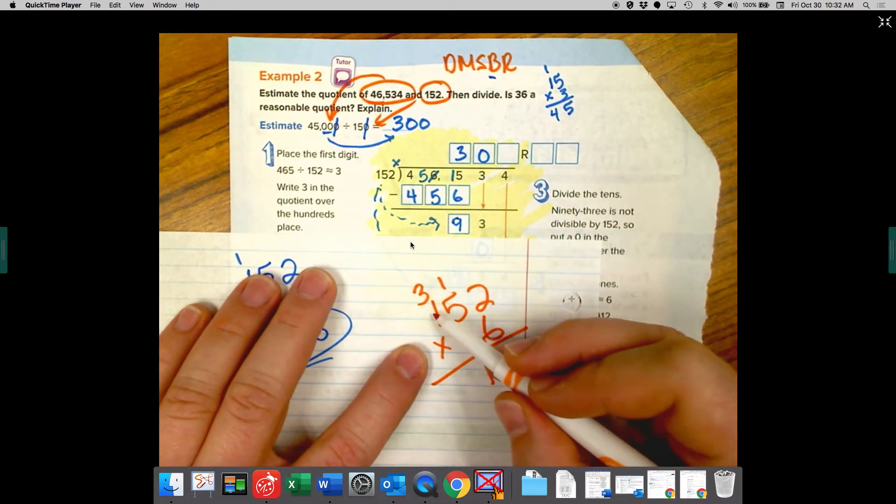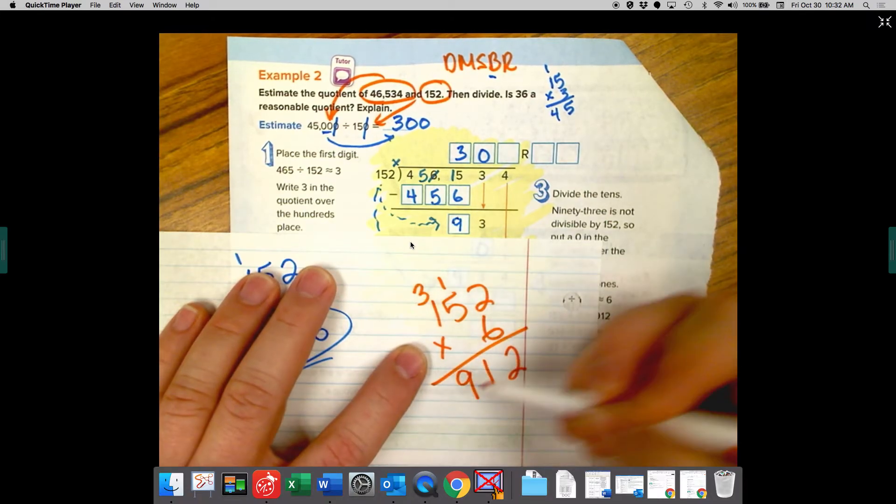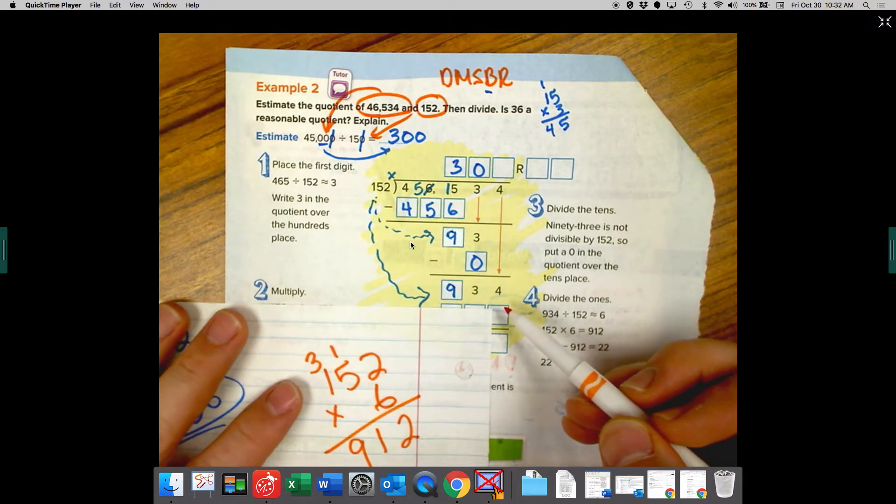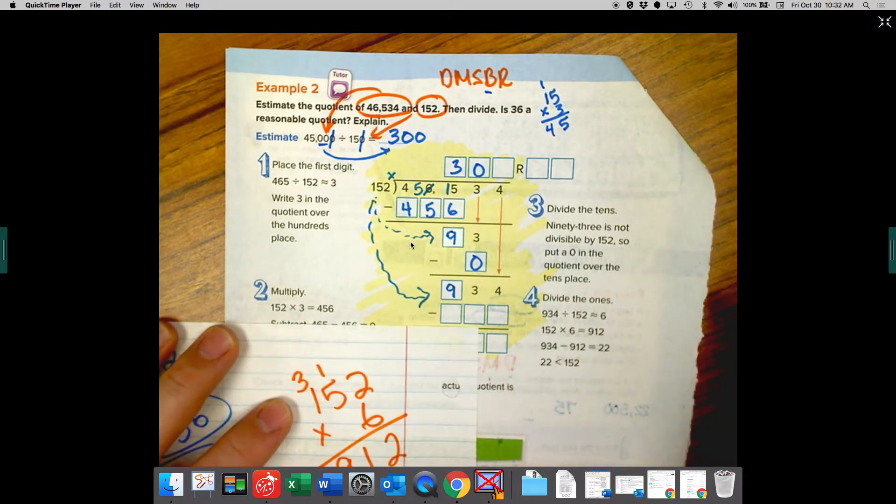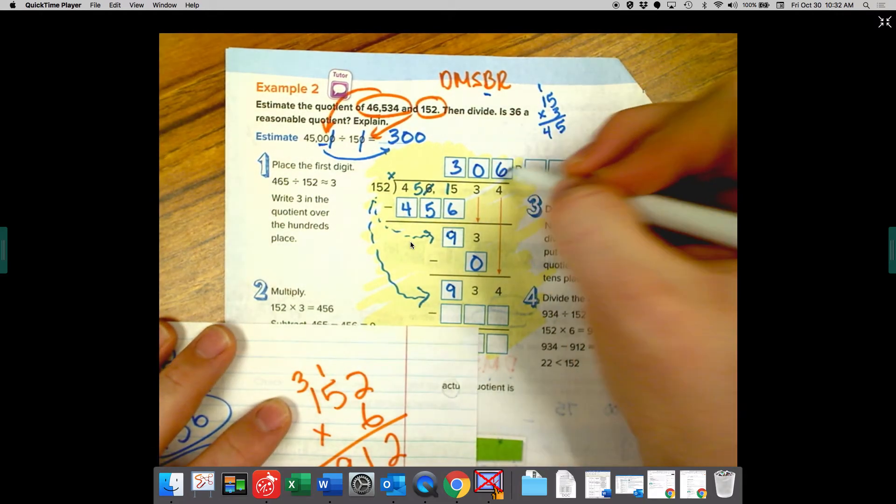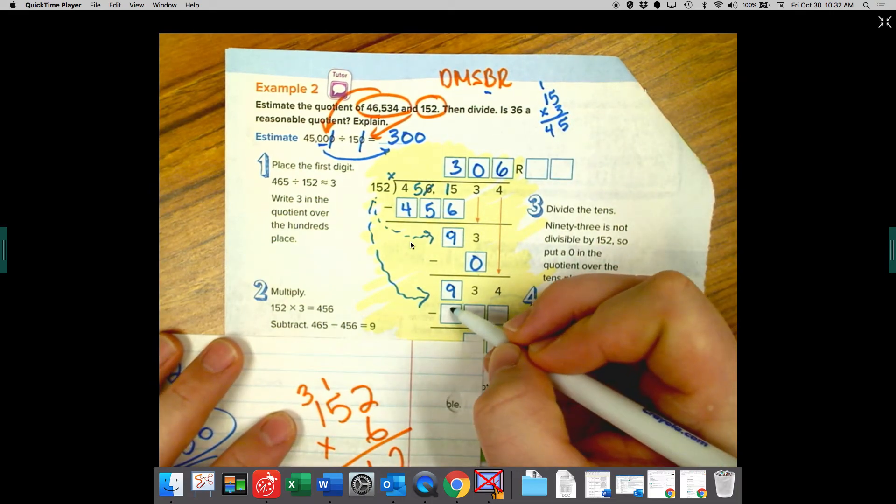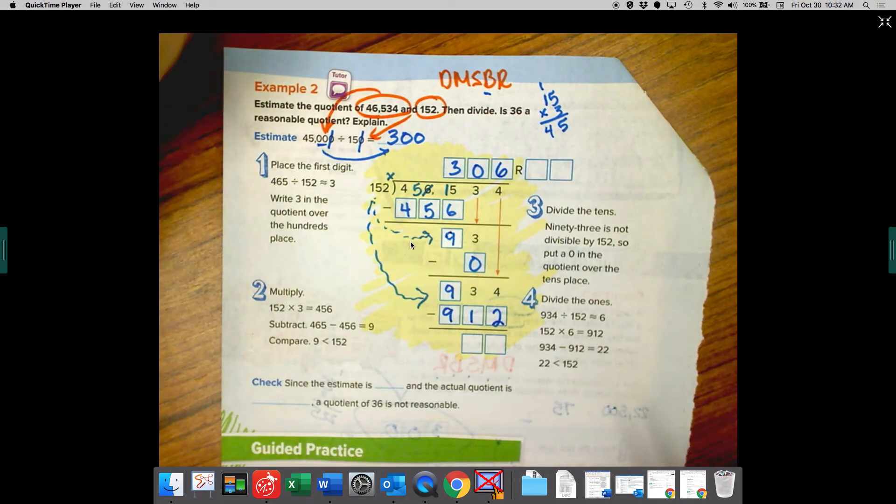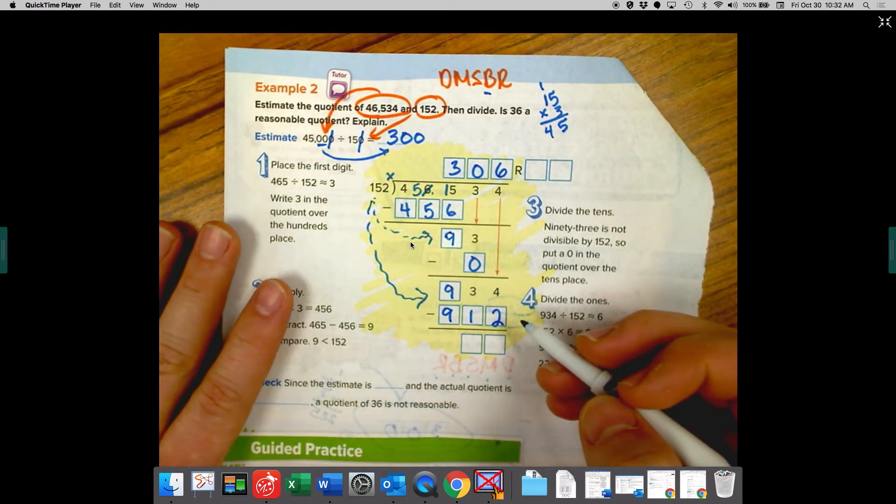Six times one is six, seven, eight, nine. So our answer is 912. Does that get us pretty close? Yeah, it does. So if we put six here and we minus 912, we're going to subtract to see how much we have left.